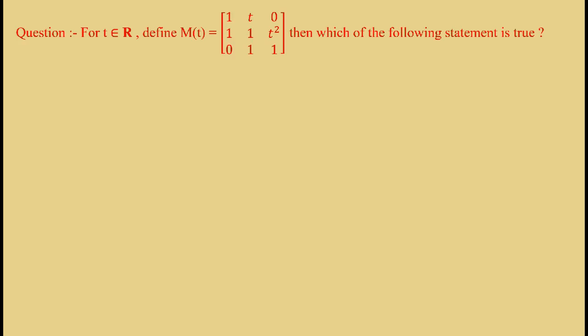The question is: for t belongs to R, the set of real numbers, define M(t) as 3×3 matrix as [1, t, 0; 1, 1, t²; 0, 1, 1], then which of the following statement is true?